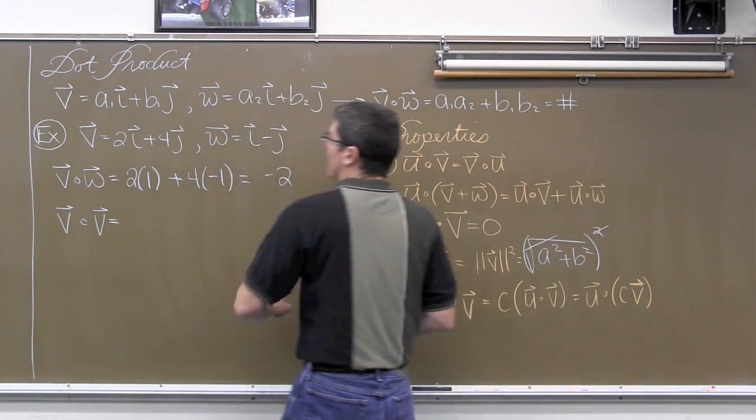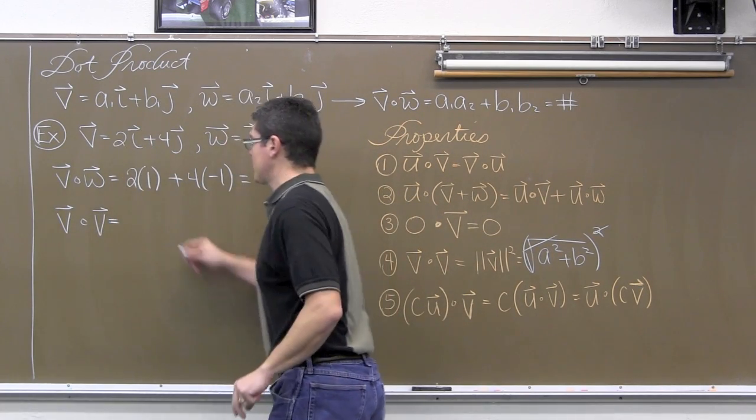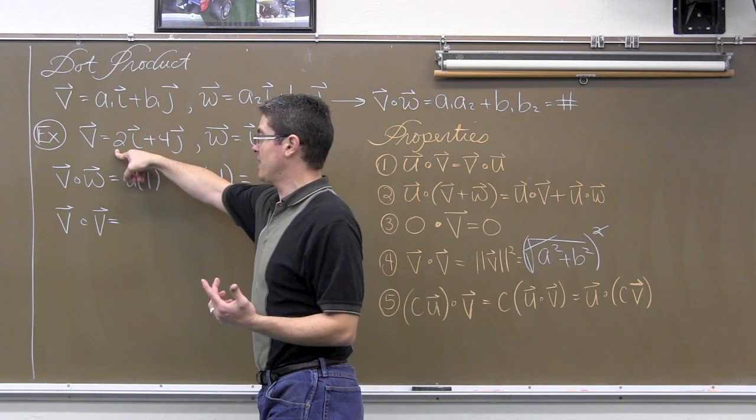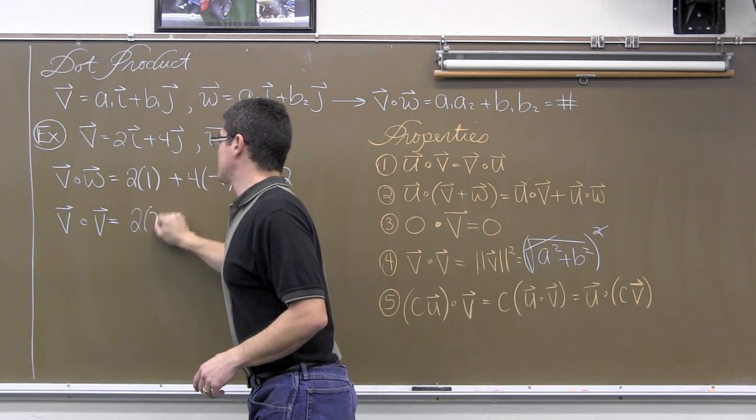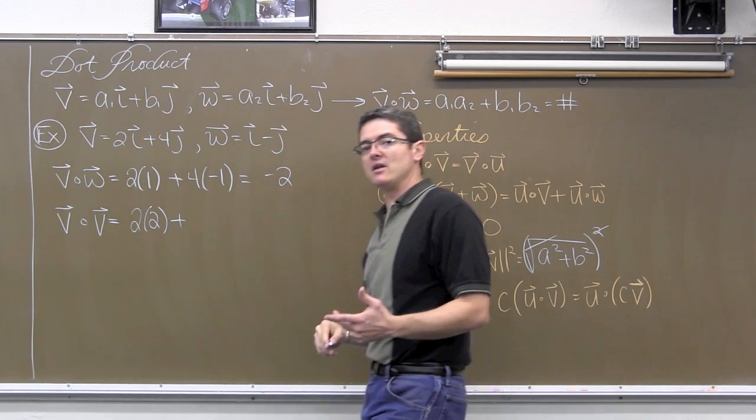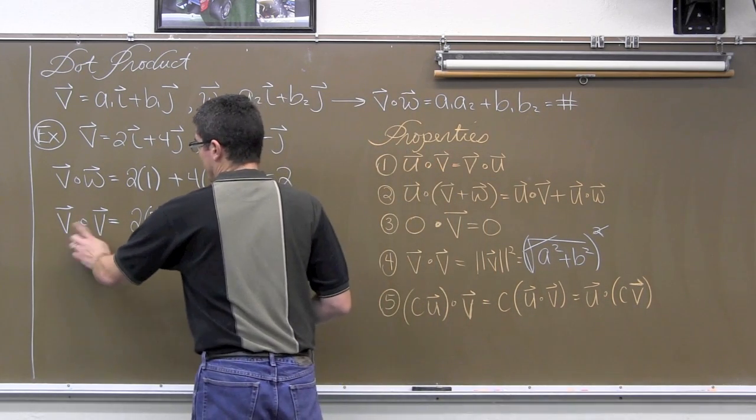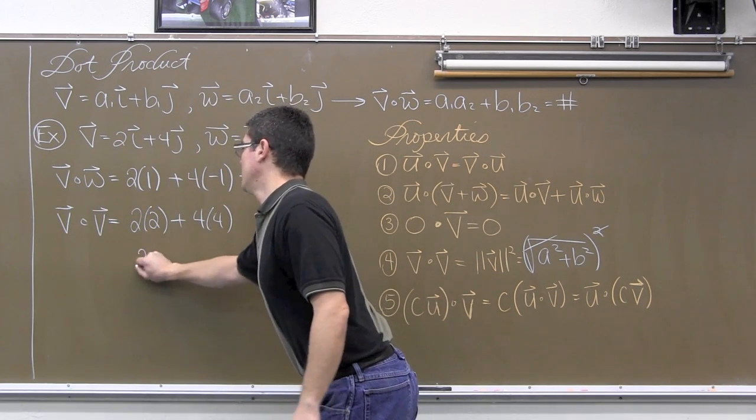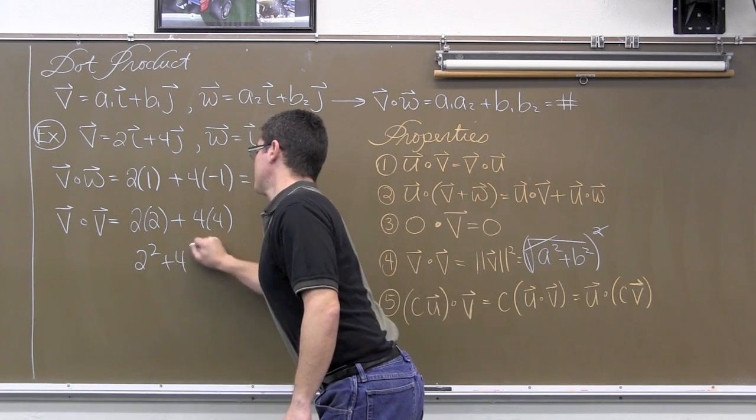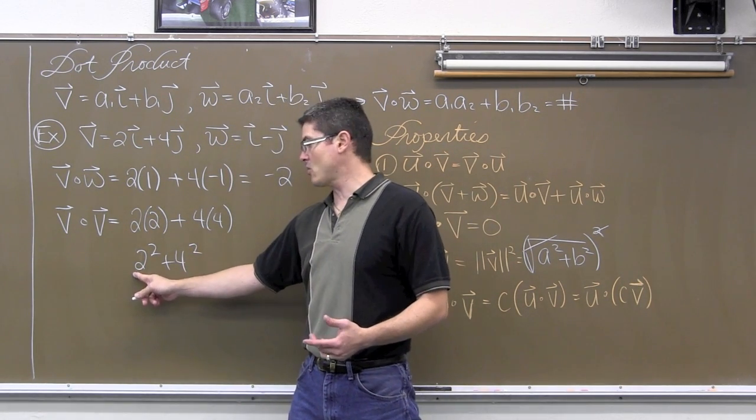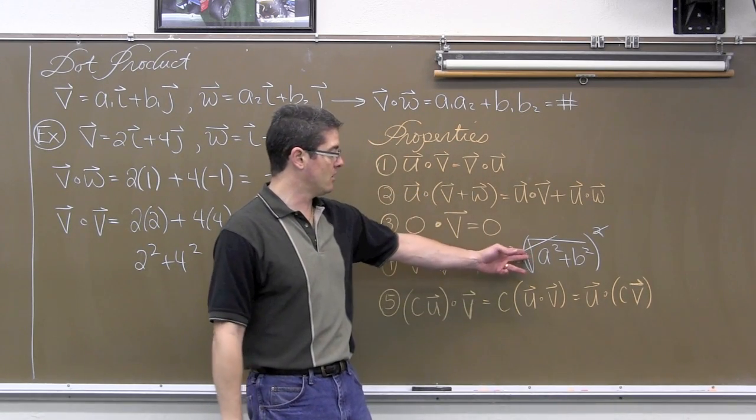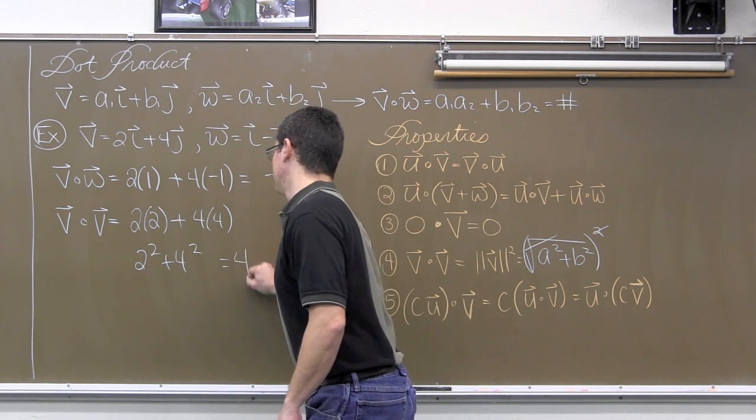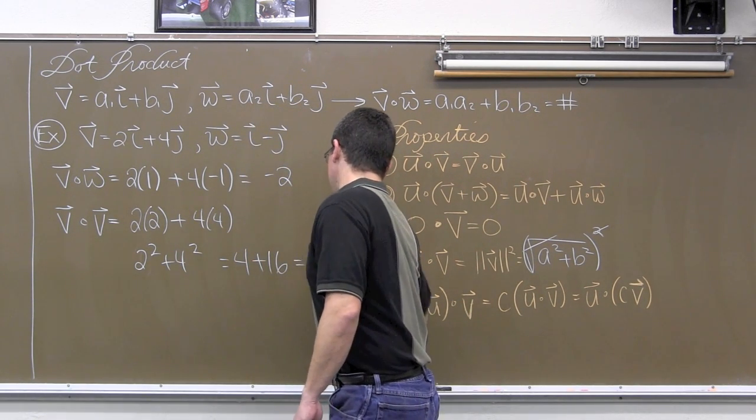Now, if I take vector v and I do a dot product with itself, let's take vector v and find the dot product with vector v, that is going to be the two a values multiplied together. So two times two plus the two b values multiplied together. And v is being dotted with itself, so I am using the same a and the same b value. So four times four, and here I have got two squared plus four squared, see what this is starting to look like? That is a squared plus b squared, exactly what I had over here when I wrote out the magnitude formula. And that ends up becoming four plus sixteen, which is equal to twenty.